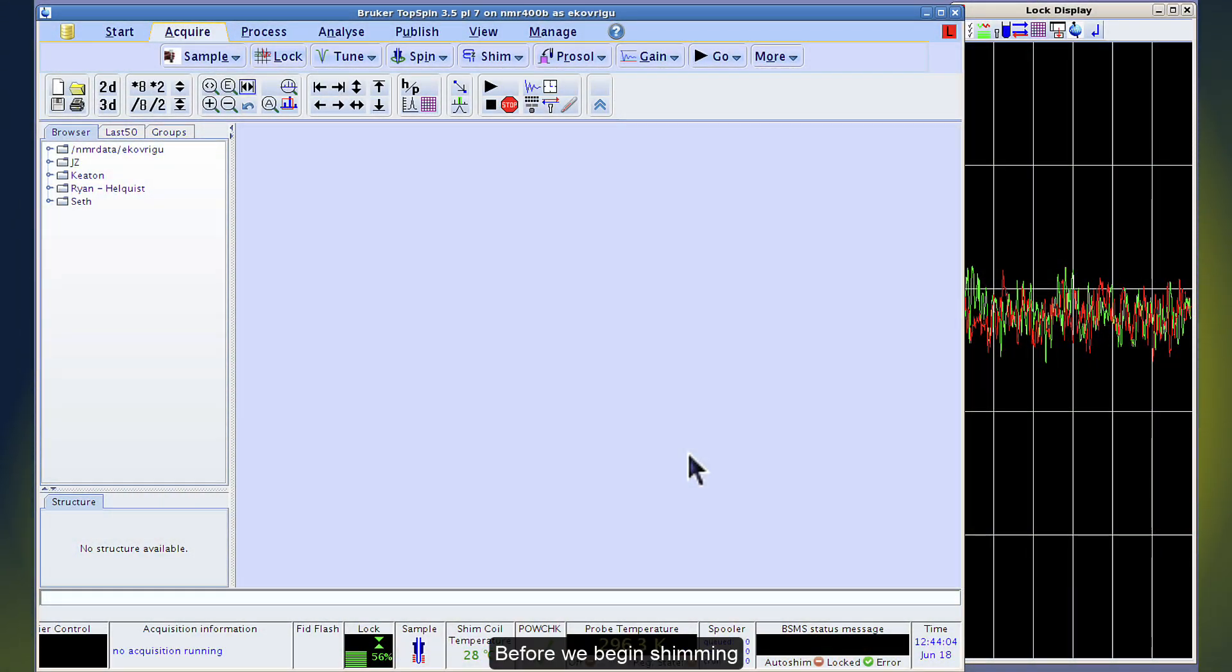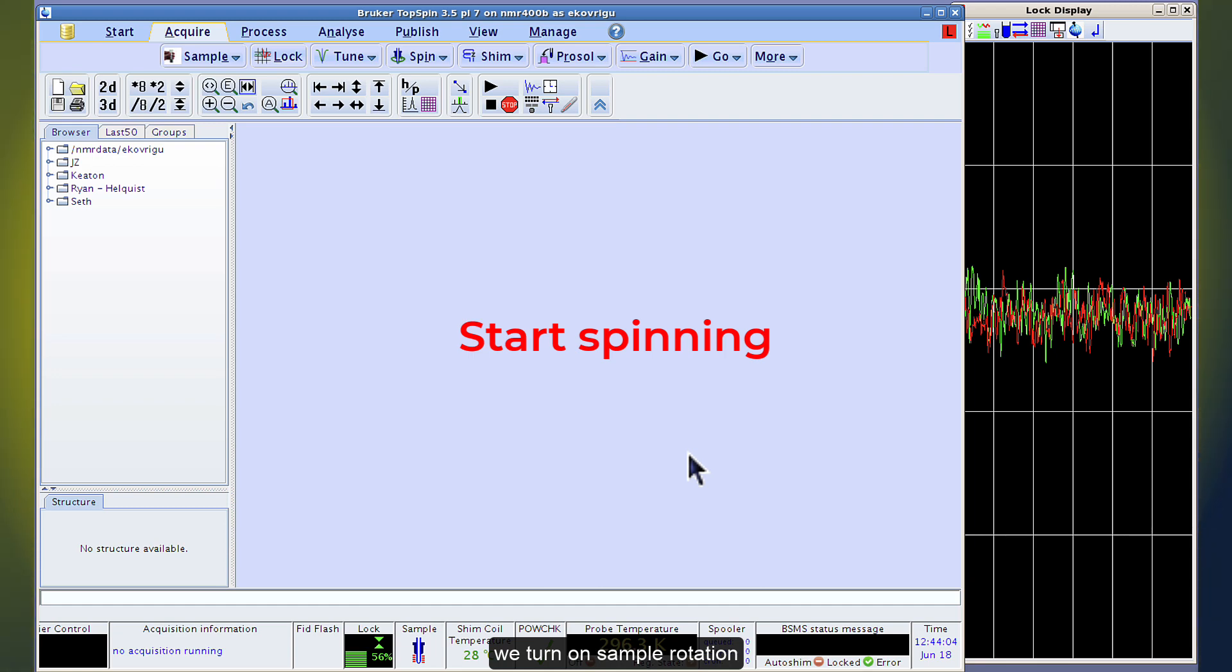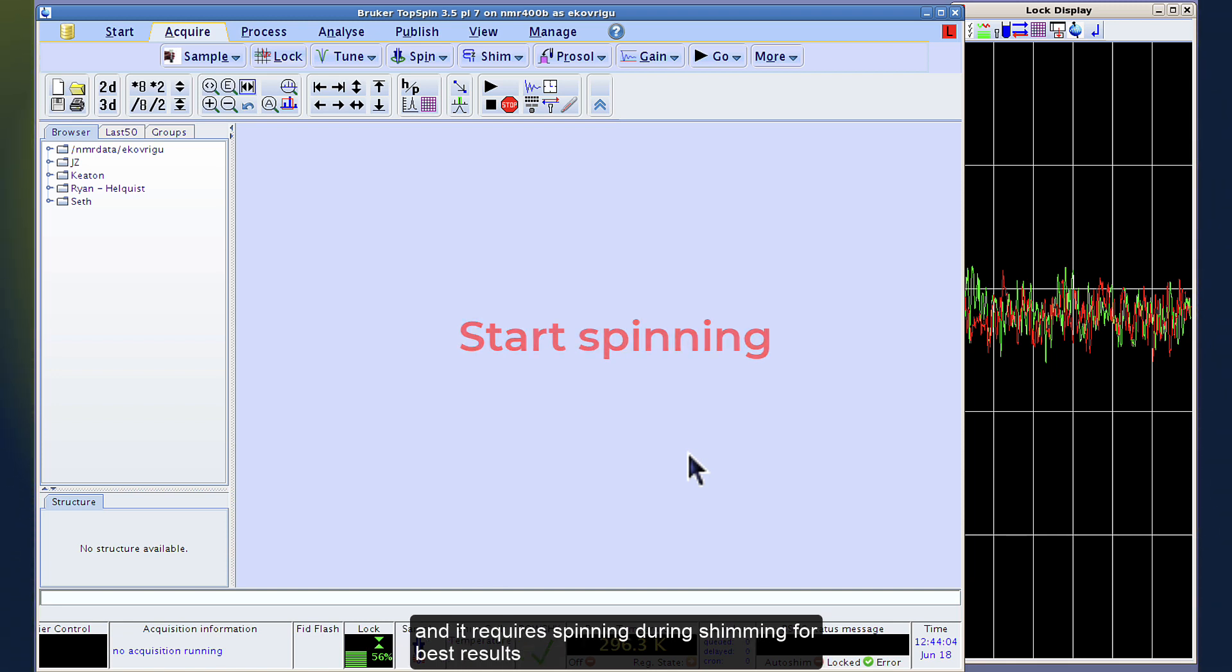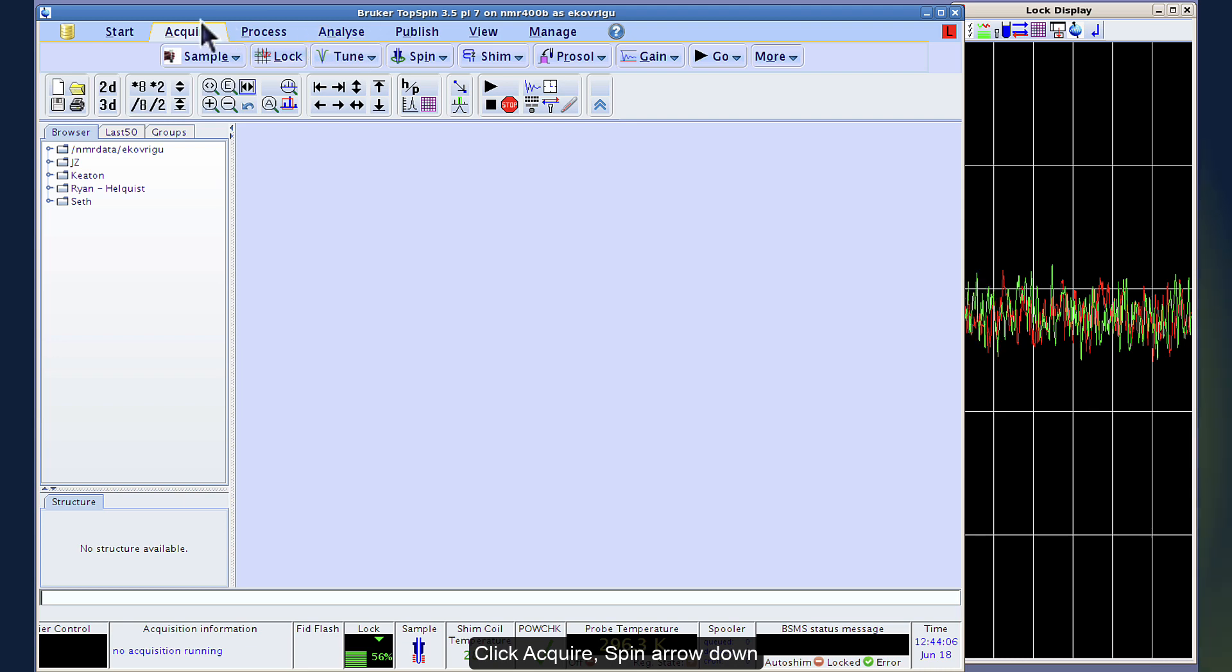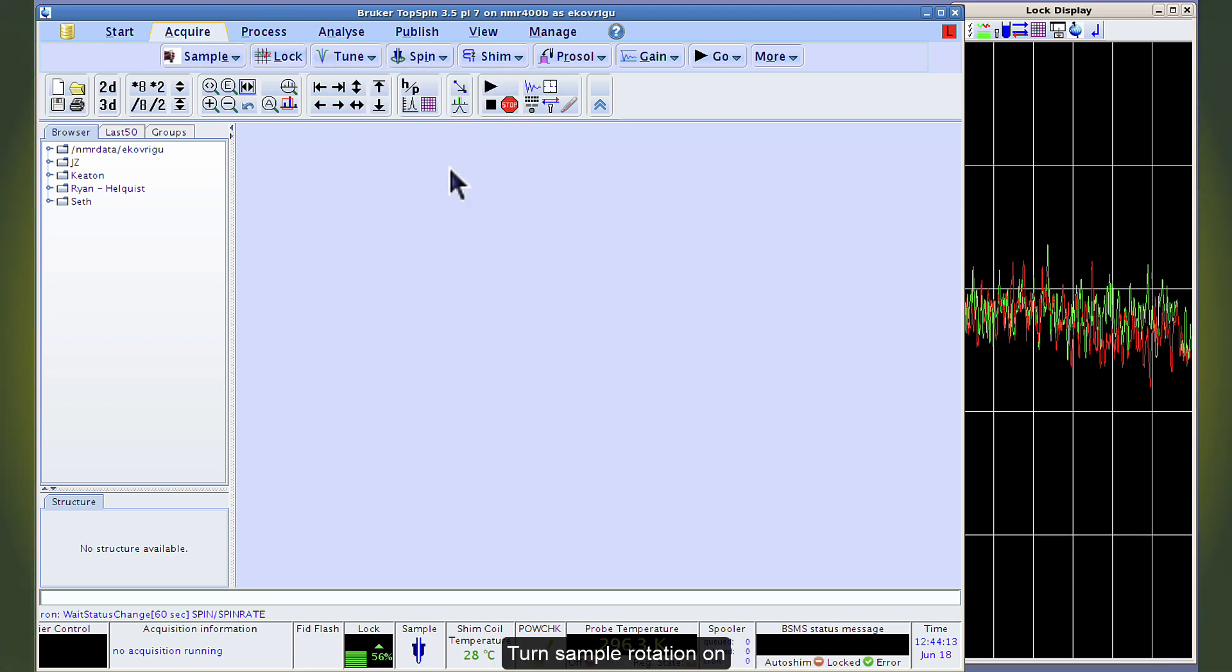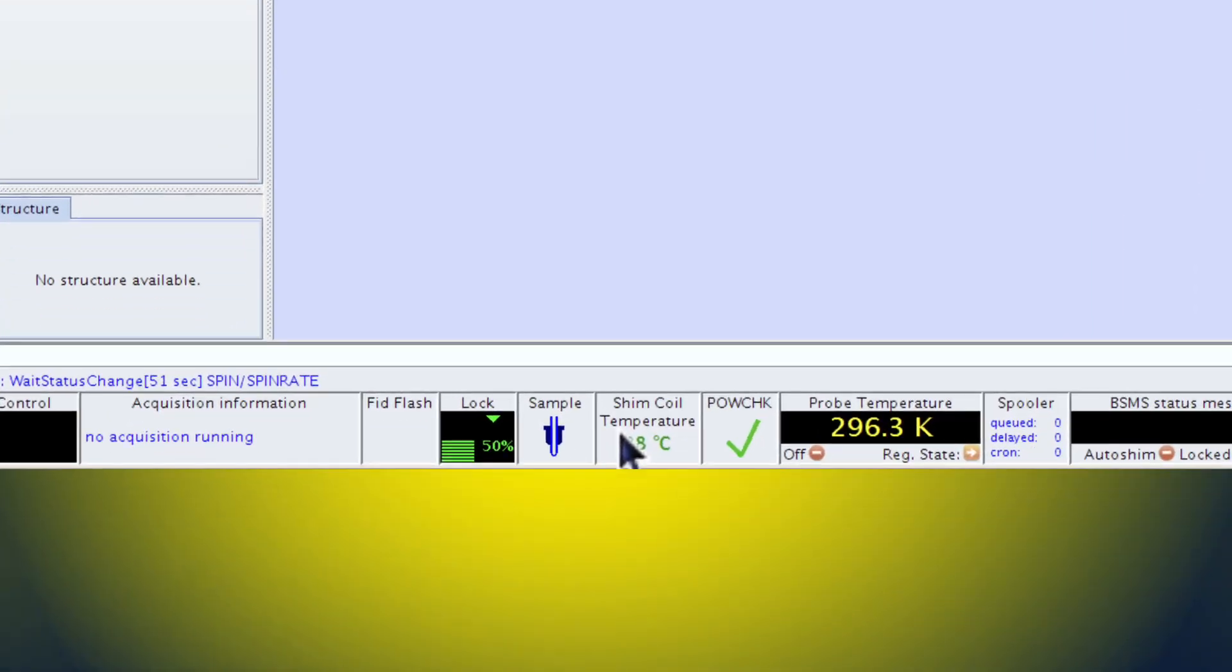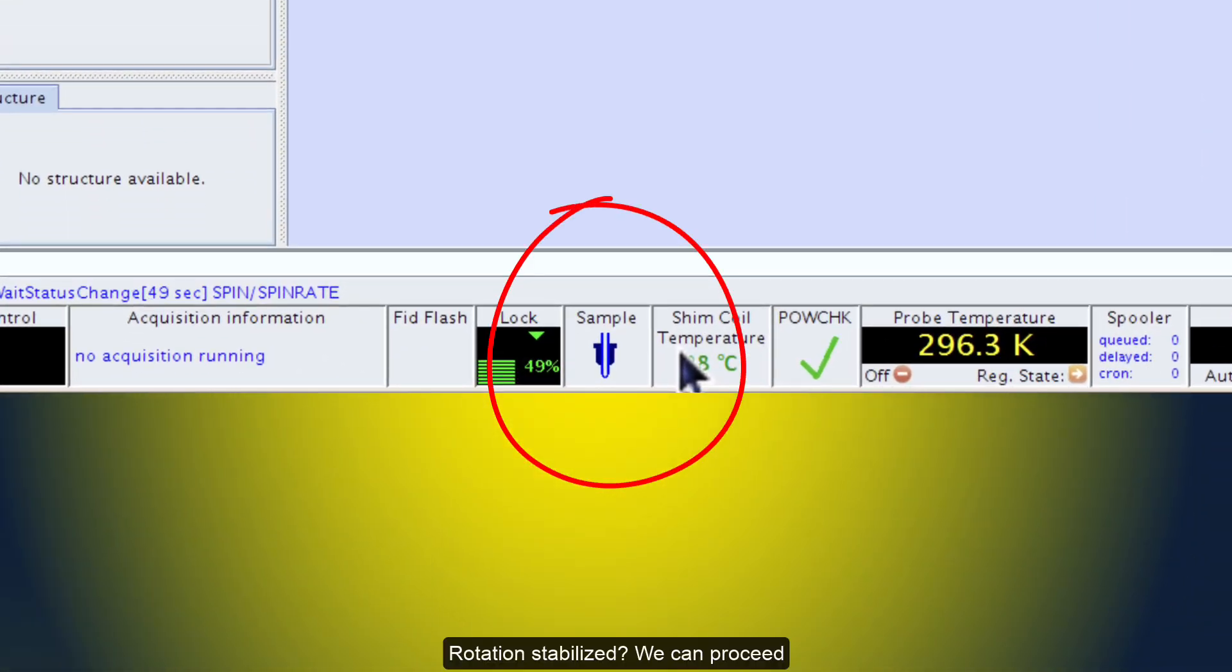Before we begin shimming, we turn on sample rotation. Our shimming procedure will be what is called one-dimensional and it requires spinning during shimming for best results. Click acquire, spin arrow down, turn sample rotation on. Alternatively, you can type arrow on on a command line. Rotation stabilized, we can proceed.